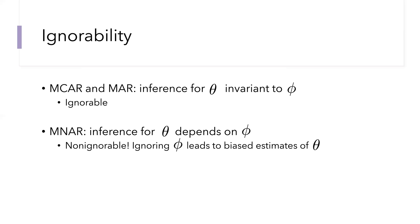On the other hand, when we have missing not at random data, then the appropriate inference for theta, what we care about, does depend on phi, the parameters governing the missingness model. So when we have MCAR and MAR data, we can ignore phi, but when we have MNAR data, it's not ignorable. Ignoring phi will lead to biased estimates of theta.